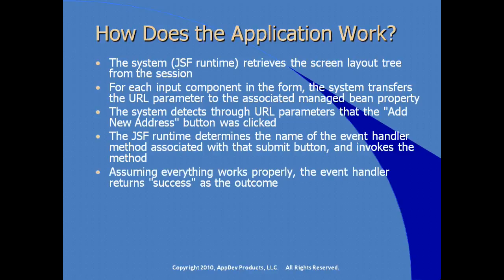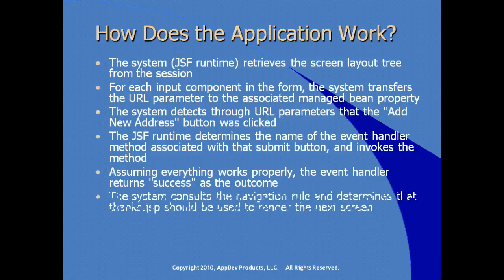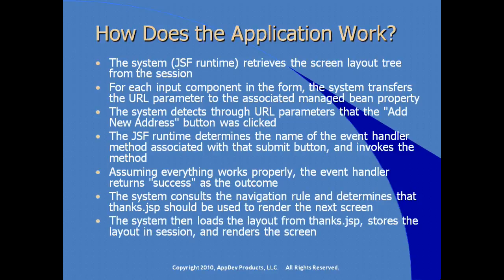Assuming everything works properly, the event handler method returns a string — in this case, 'success', though it doesn't have to be that word. The system consults the navigation rule for that string and determines that, in our case, thanks.JSP — the to-view-id element — should be rendered as the next screen. The system loads the layout from that JSP, stores the layout in session, and renders the screen.